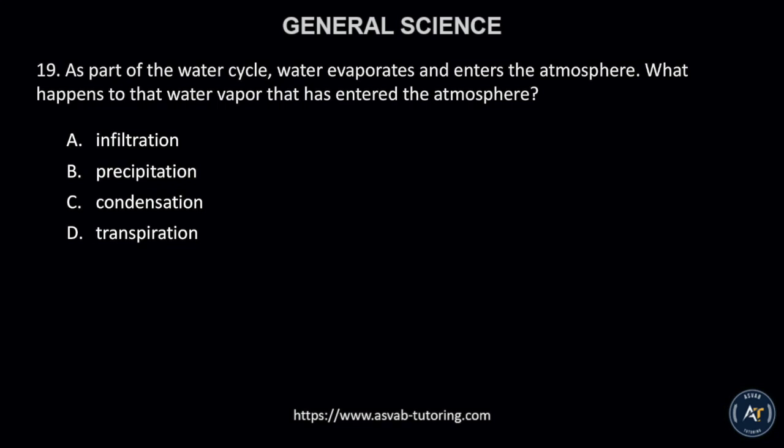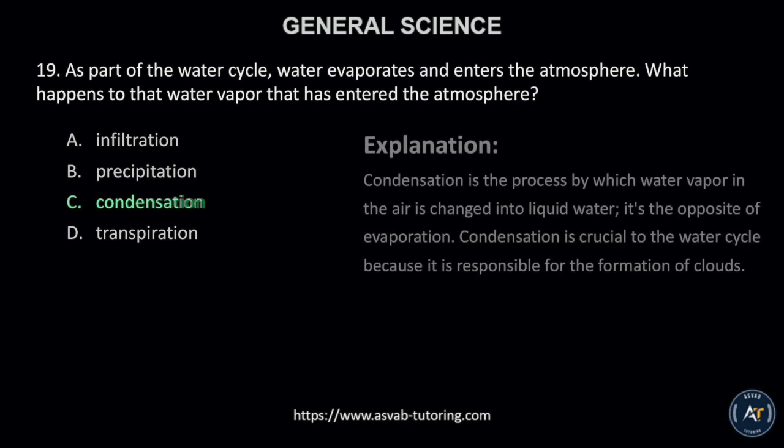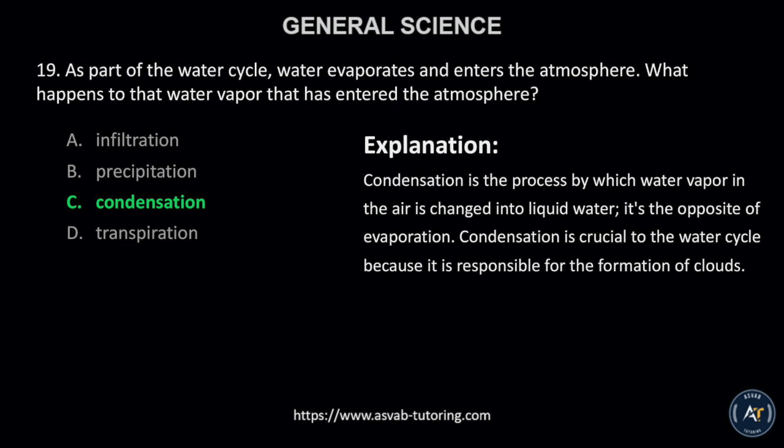Number 19. As part of the water cycle, water evaporates and enters the atmosphere. What happens to that water vapor that has entered the atmosphere? A. infiltration, B. precipitation, C. condensation, or D. transpiration? The correct answer is letter C, condensation. Condensation is the process by which water vapor in the air is changed into liquid water — it's the opposite of evaporation. Condensation is crucial to the water cycle because it is responsible for the formation of clouds.